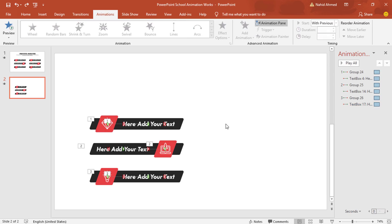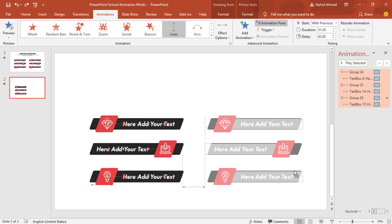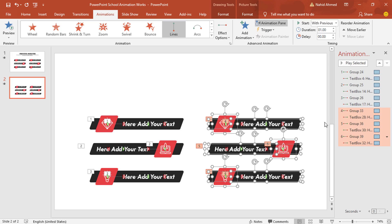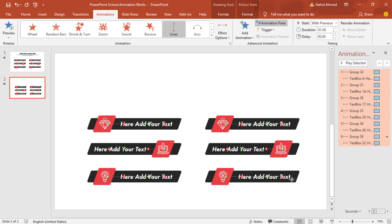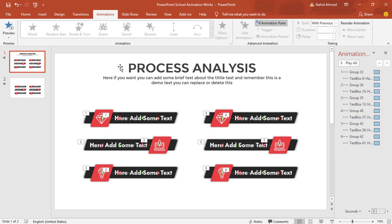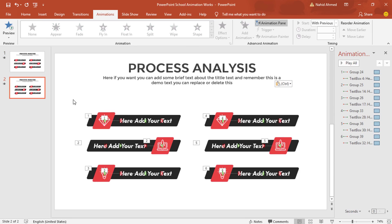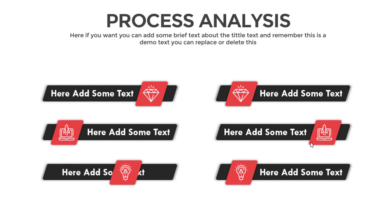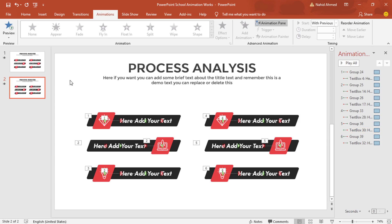We have added all the animations. Now press Ctrl+A to select all of these, then holding Ctrl+Shift drag them to the right and they will be duplicated. You can see that all the objects have been duplicated along with their animations, so you don't need to add animations again. Now select all of them and place them in the middle of the slide.